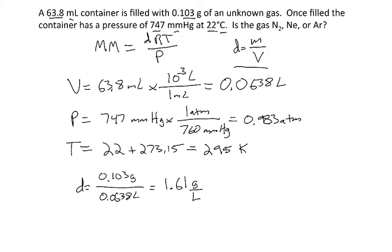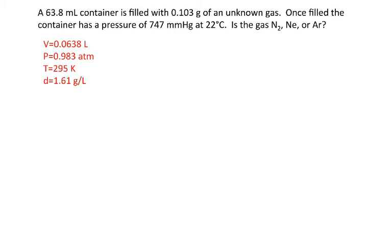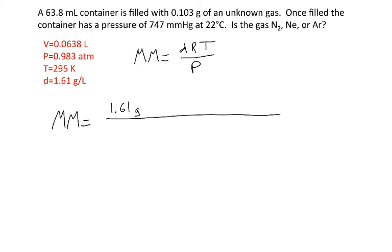All right, and now we're ready to plug things into our molar mass equation. And I'll do that on the next slide. So the equation we need to solve is molar mass equals density RT over P. And I have the values that we calculated in the previous slide on the left in red. So molar mass is the density, 1.61, and that's grams per liter. So I'm going to put the liter down in the denominator. And then I have R.